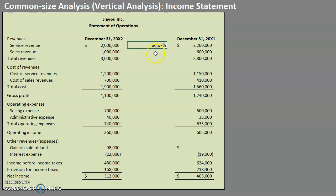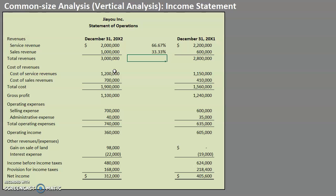I'm going to do the same thing for sales revenue. Sales revenue comes out to a third — 33.33%. We are going to continue to do that for every single line item.